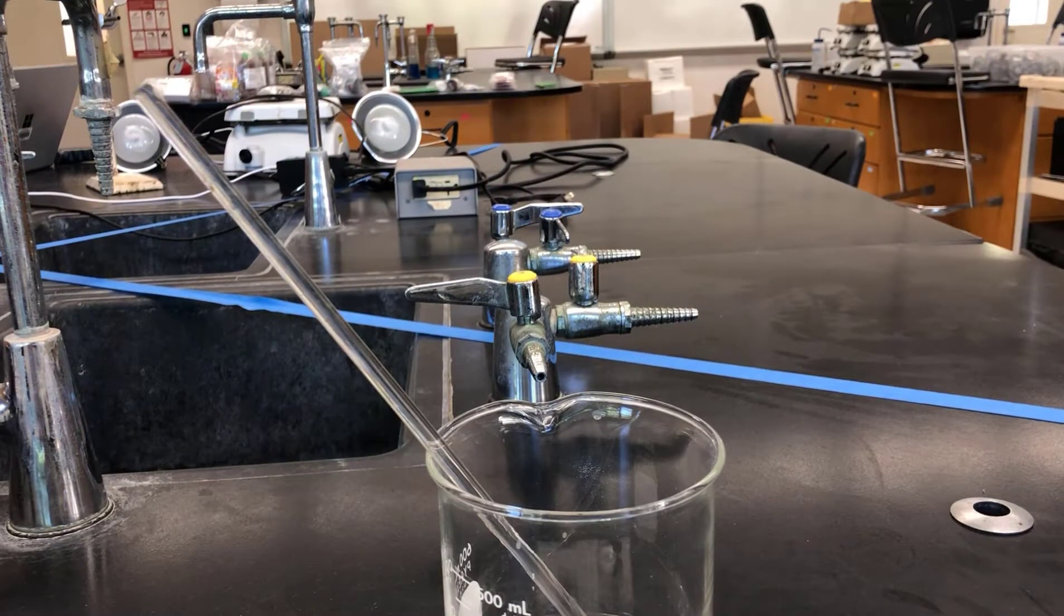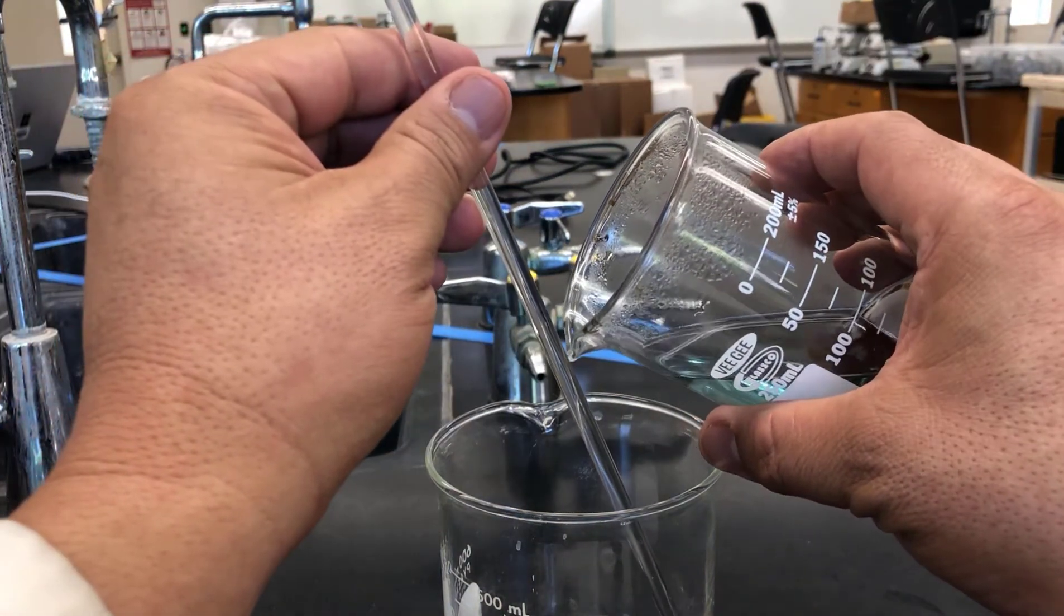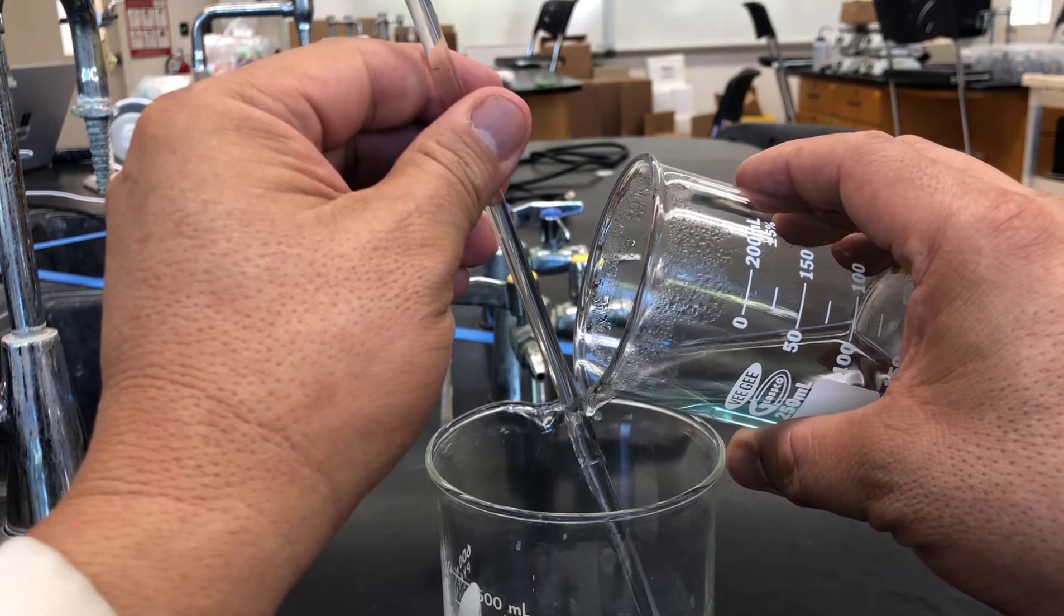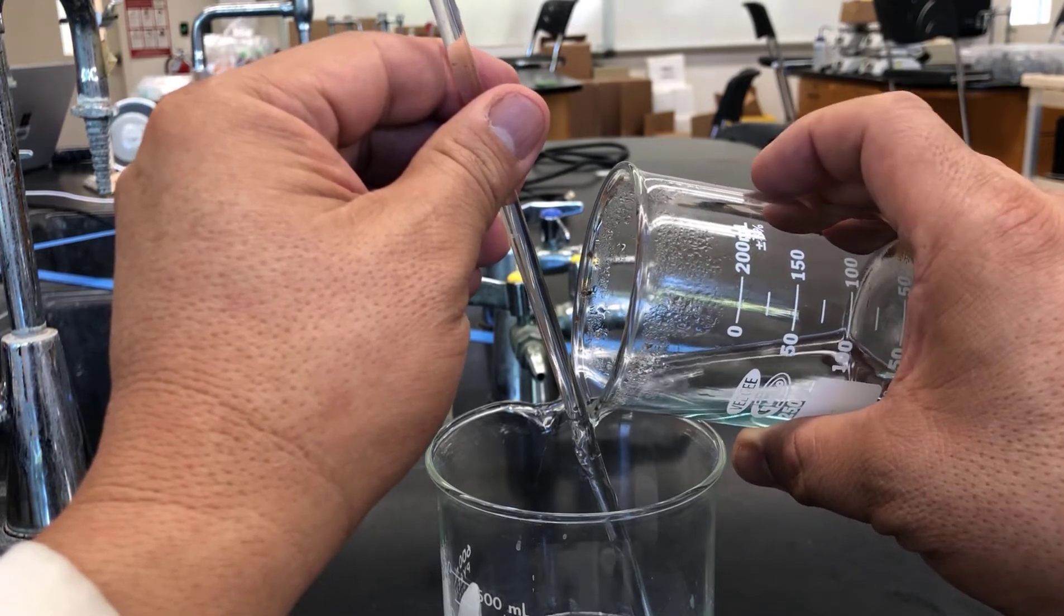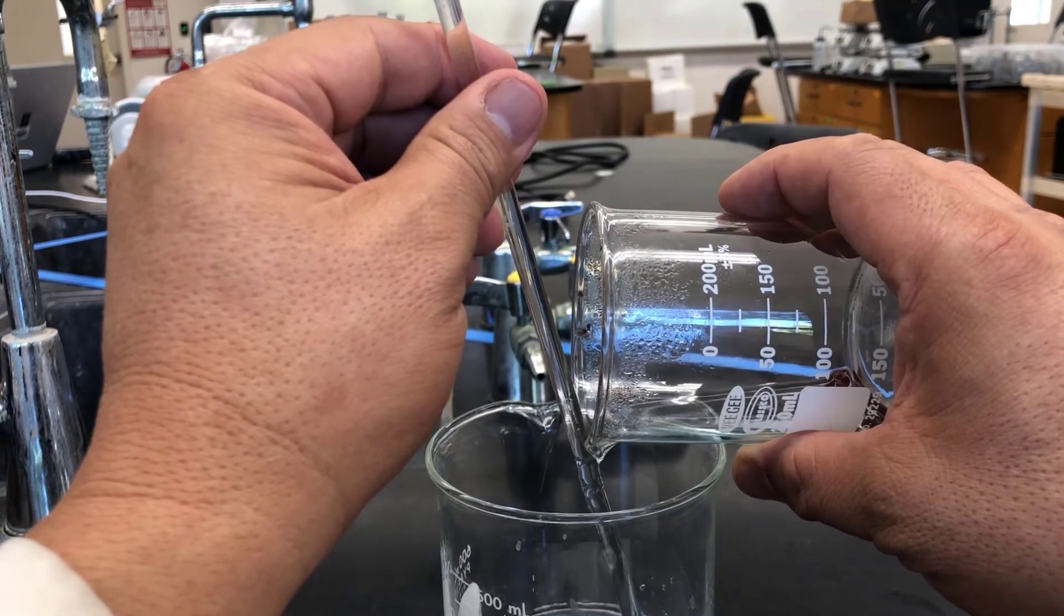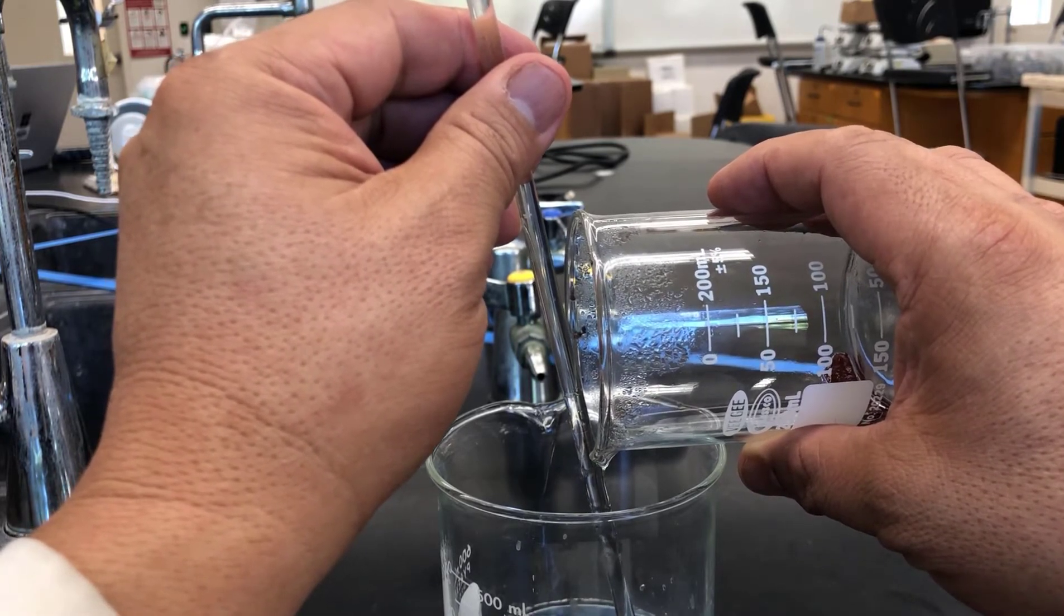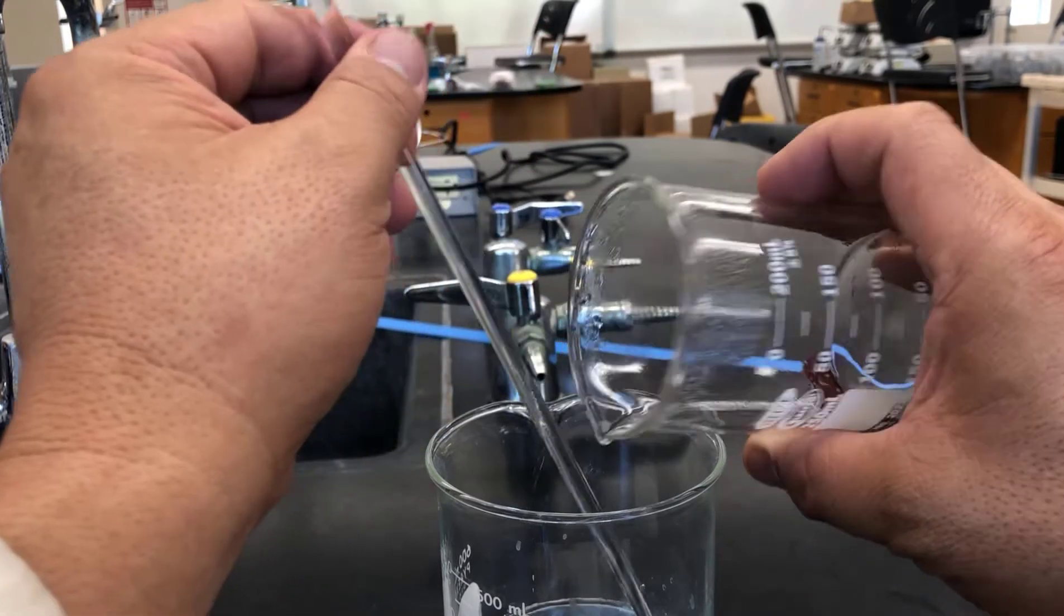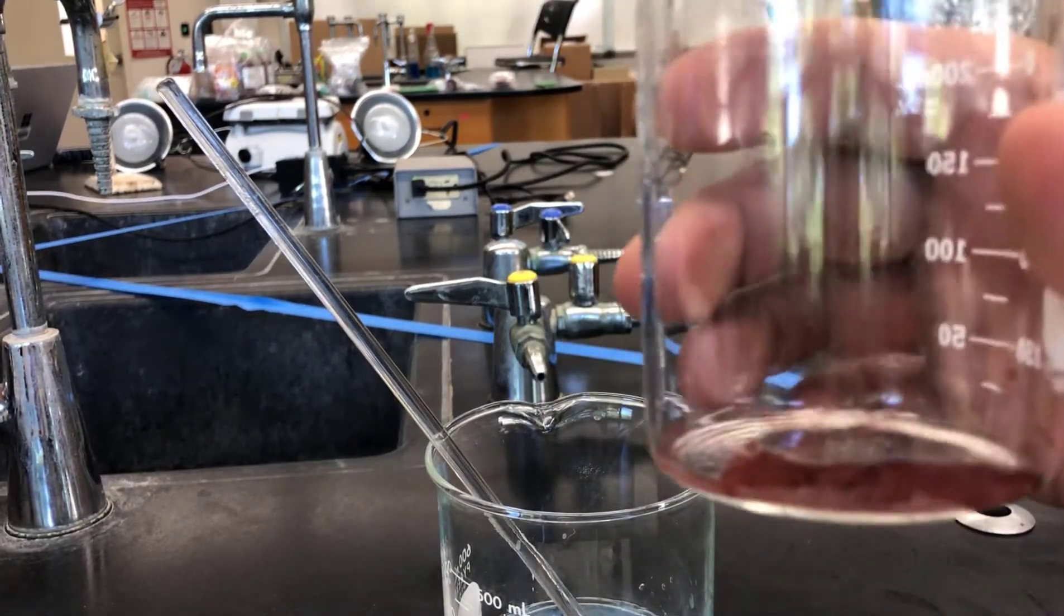Okay. So we're ready to decant into our waste beaker. And we'll try to do that without losing any copper. I've let it settle for quite a while, so it should be pretty good. It's done a really good job of separating without losing any of the copper. You'll notice it all stayed down at the bottom right there. That's what our copper looks like right now.